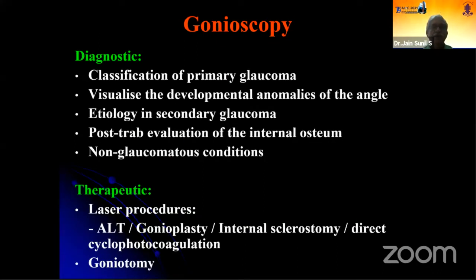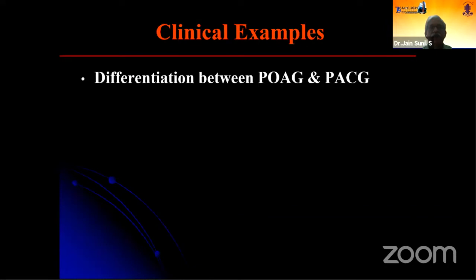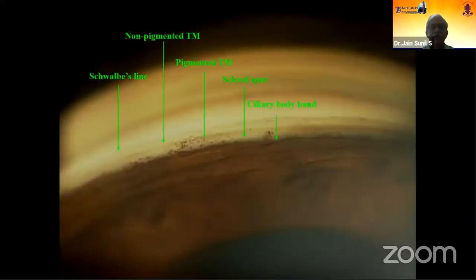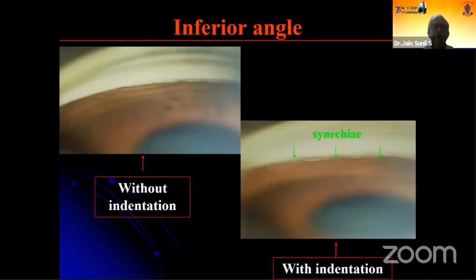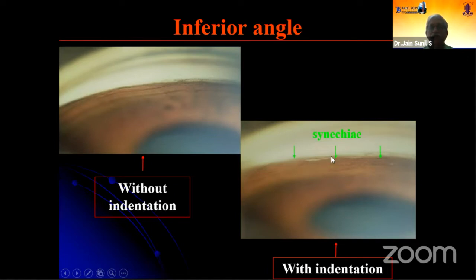Gonioscopy is not only essential for diagnostic purposes but is also used for therapeutic purposes. This is how a wide open angle or primary open angle glaucoma would appear. And this is how a narrow or occludable angle looks. You might mistake this area as the trabecular meshwork because of pigmentation, but it is only when you do indentation that you realize the entire lens diaphragm moves backward and you can see the synechial angle closure, with the trabecular meshwork located here.